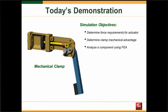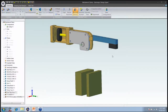Now moving on to the demonstration. We have three objectives: first, determine the force requirements in the actuator; second, look at the mechanical advantage based on the given geometry — applying a force to the clamp pad and determining how much actuator force it takes to cycle through the full range of motion; and third, examine stresses and deflections on the gray-colored clamp shaft component using FEA. I'll toggle over to my assembly in Geomagic Design.